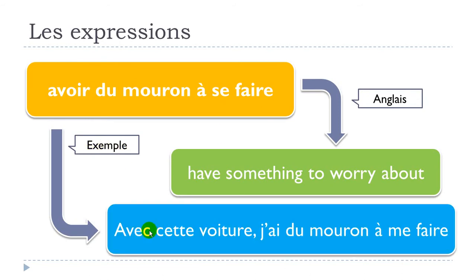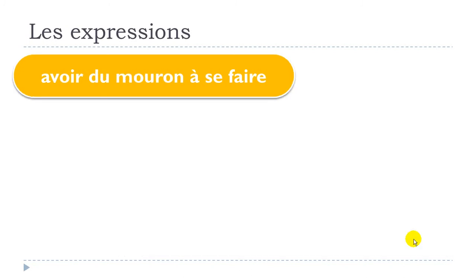Here is one example: 'avec cette voiture, j'ai du mouron à me faire.' If you look carefully at the expression, the 'se' part has been changed to 'me' here, because we have the first person 'je'. You will have to modify this part that comes before your verb according to the subject.